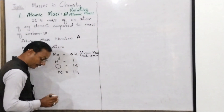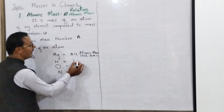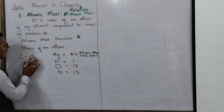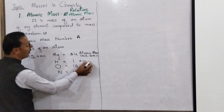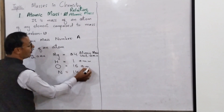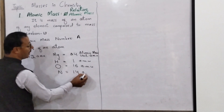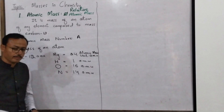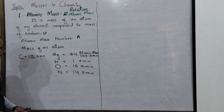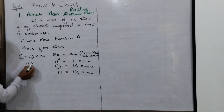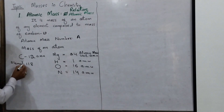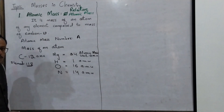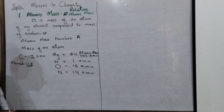This is written as AMU in short — AMU. So this means carbon-12, carbon's atomic mass is 12 AMU. Similarly hydrogen's is 1 AMU, and these masses are told by comparing with carbon-12.